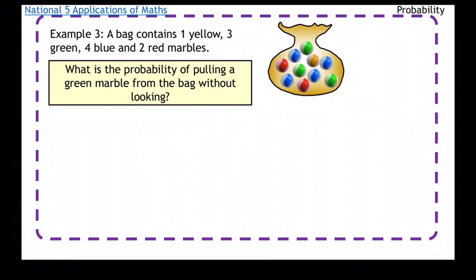A bag contains one yellow, three green, four blue and two red marbles. What is the probability of pulling a green marble from the bag without looking? So how many green marbles have we got? We've got three of them.